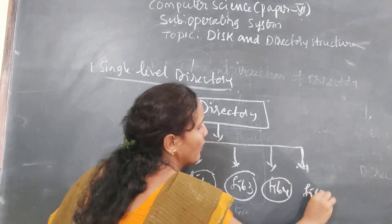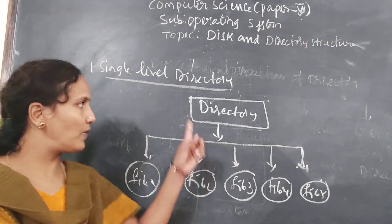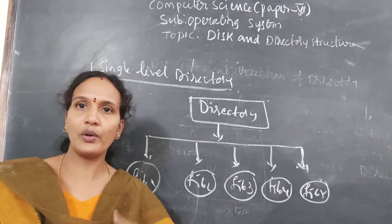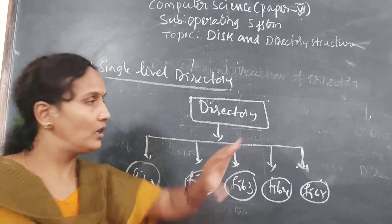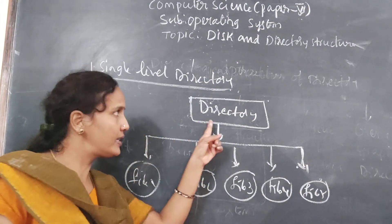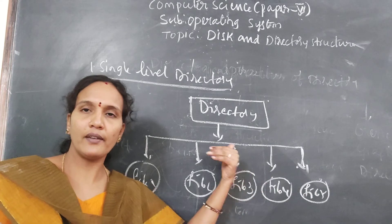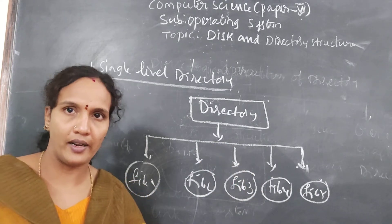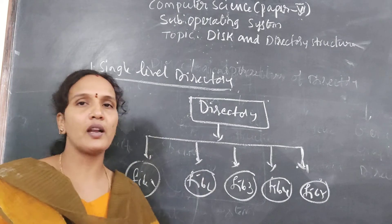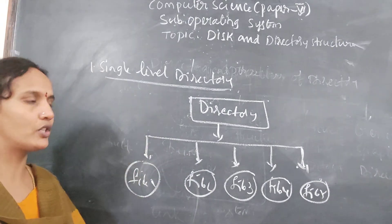File one, file two, file three, file four, file five — you don't have child directories. One main directory and inside that directory you have files. Only one level — one level directory structure. Inside that directory we have files. There are no further child directories or further levels, so it is called a single level directory. Take a screenshot of this.